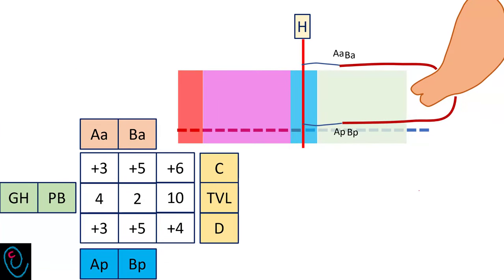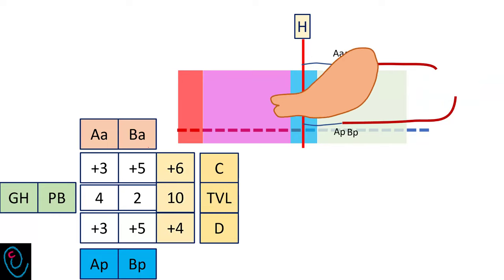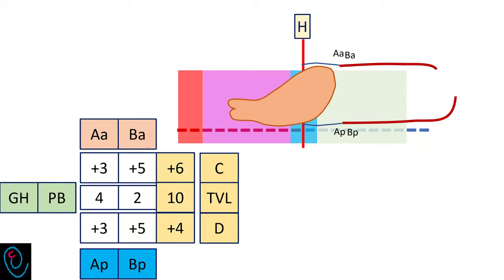Now let's assess the stage of prolapse in our case scenario. The total vaginal length is 10 cm, and the cervix prolapses to 6 cm beyond the hymen. This means apical compartment prolapse is stage 3.